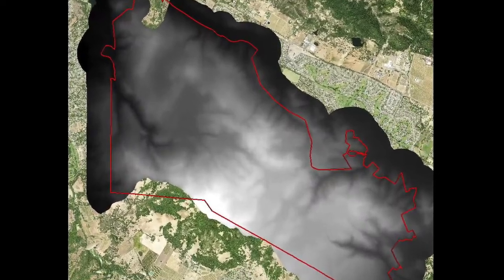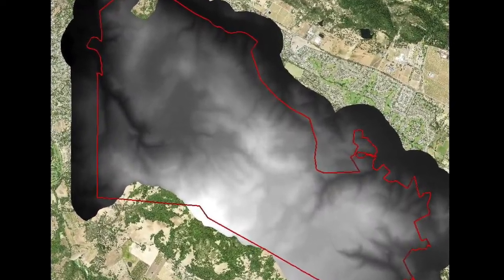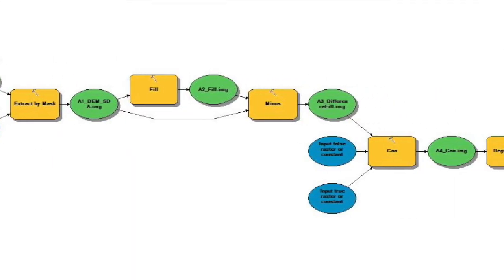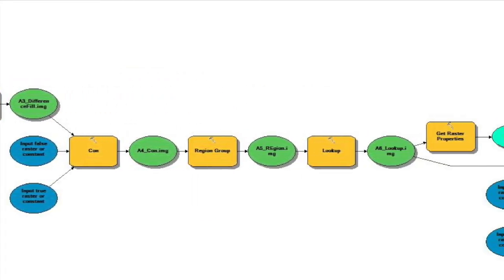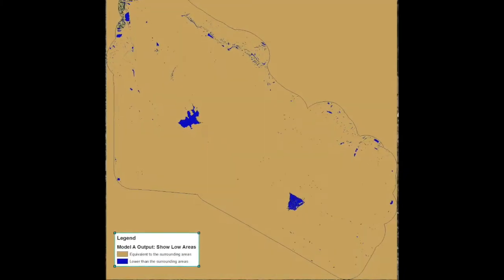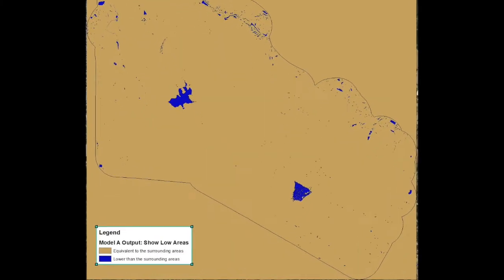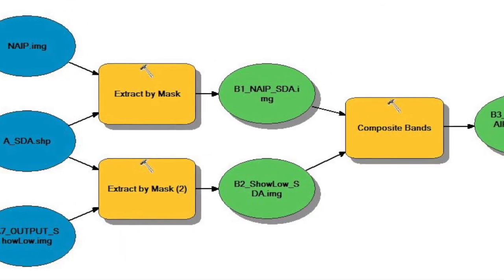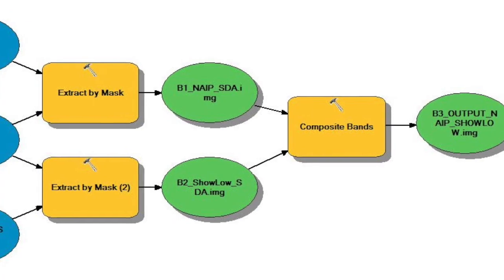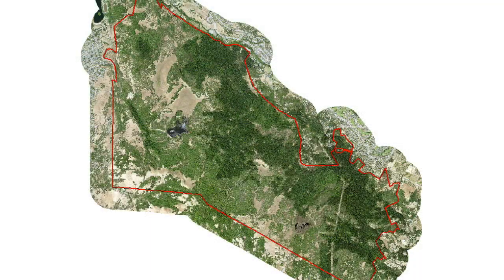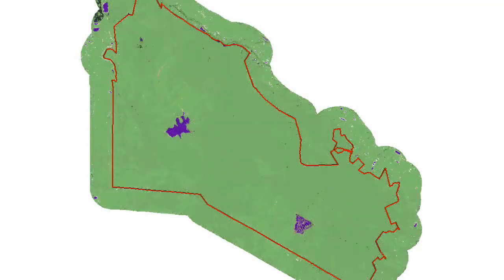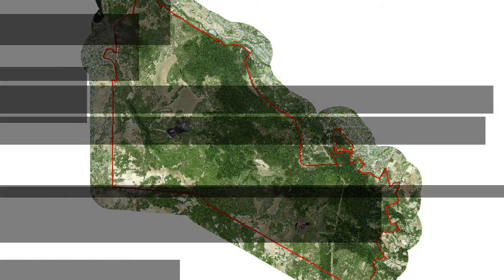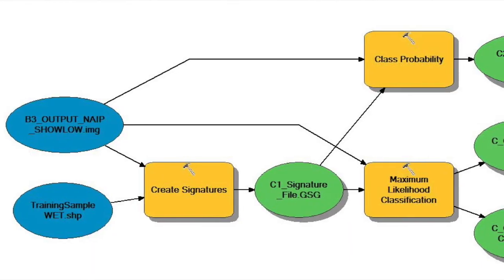For our analysis, we built three models. Model 1 calls out low elevations in our digital elevation model, or DEM, which may signify the presence of wetlands. Our second model combines high-resolution aerial imagery, the DEM output from our first model, and our study area boundary to create a merged raster dataset with elevation data.